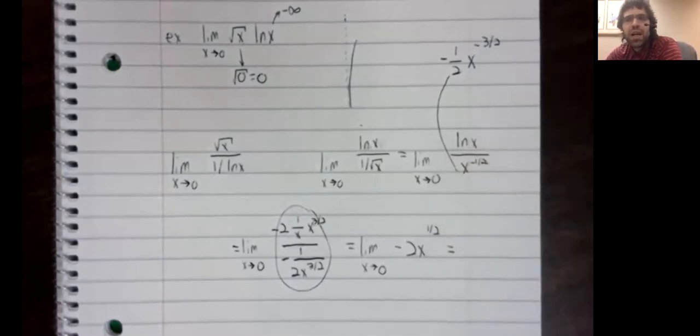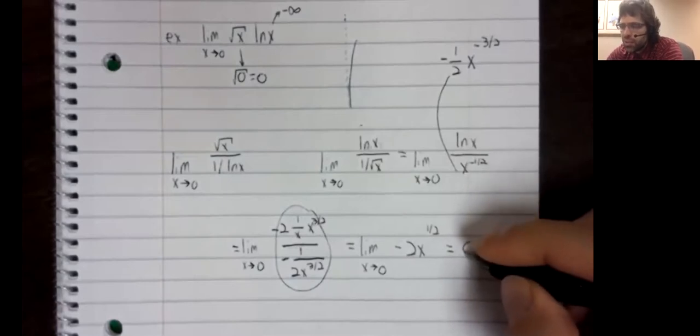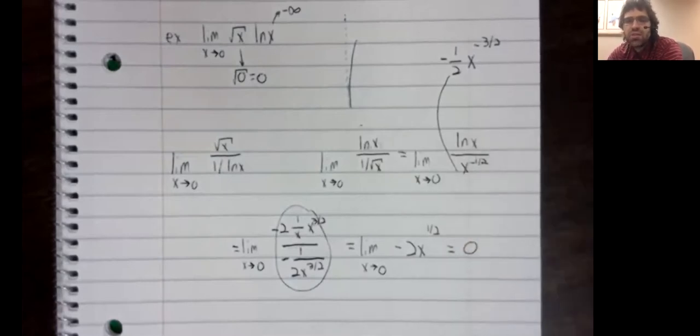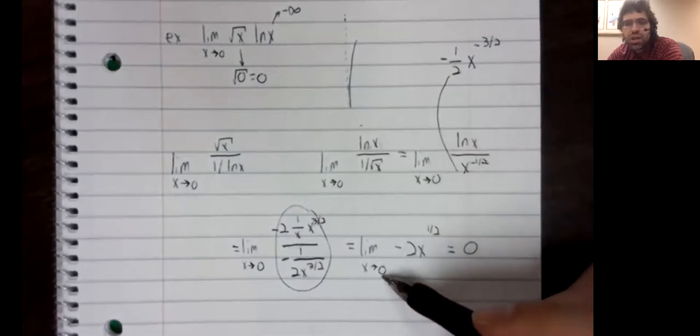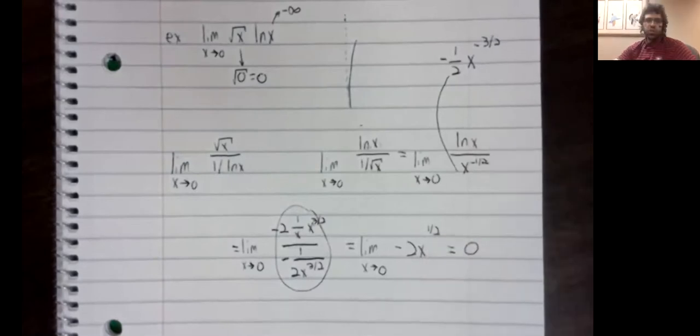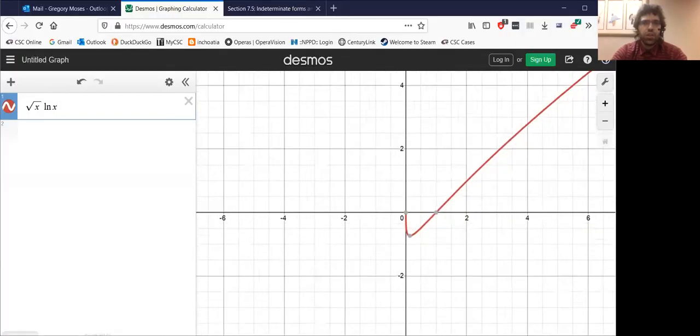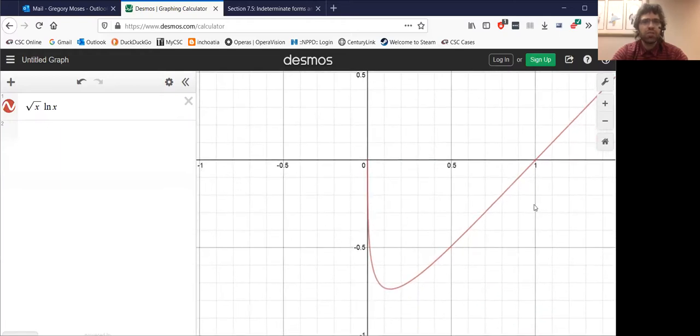And now we can apply continuity. This limit is zero. We can just plug zero in to this continuous function and get zero. And let's verify this graphically. Here is the square root of x times the natural log of x, and we verify that as x gets small, this curve is going up to the origin. Y is approaching zero. Take care.